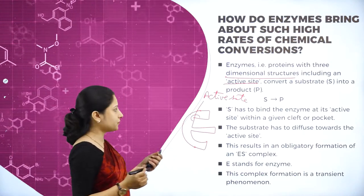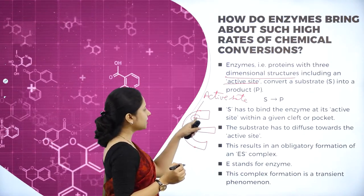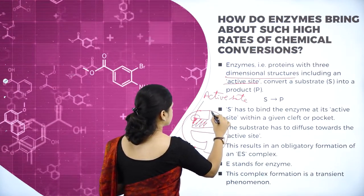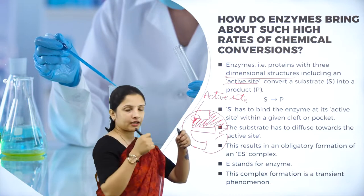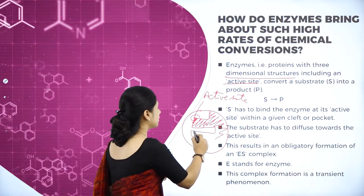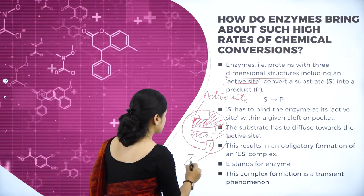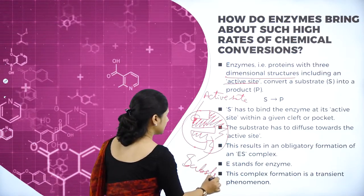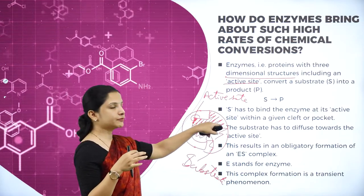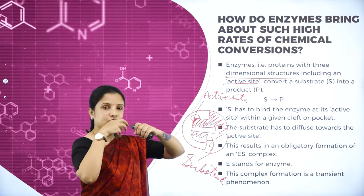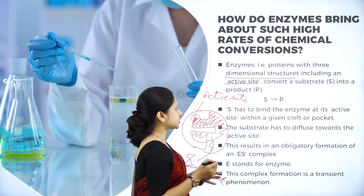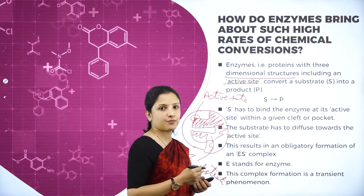The active site converts a substrate into a product. A substrate comes and binds to the active site — this is the lock-and-key model. The enzyme is the lock and the substrate is the key. The substrate fits exactly into the active site. When the substrate binds, the reaction speeds up and a product is formed.